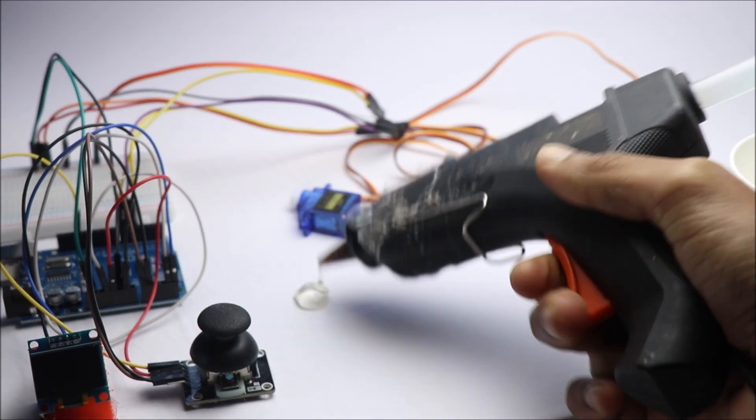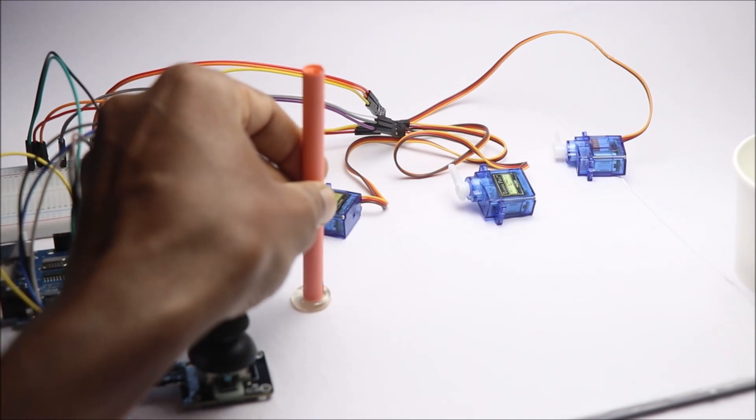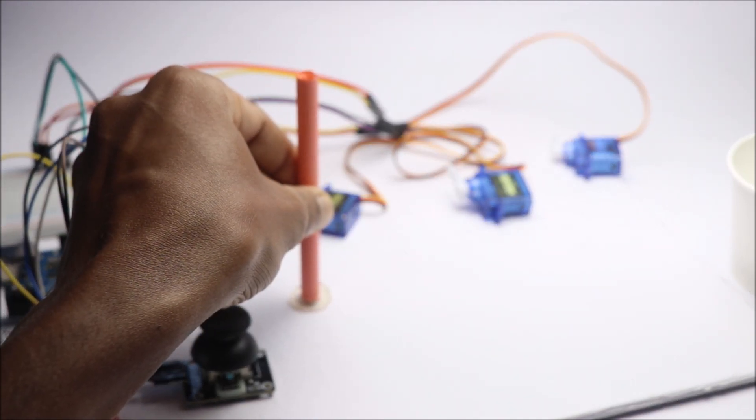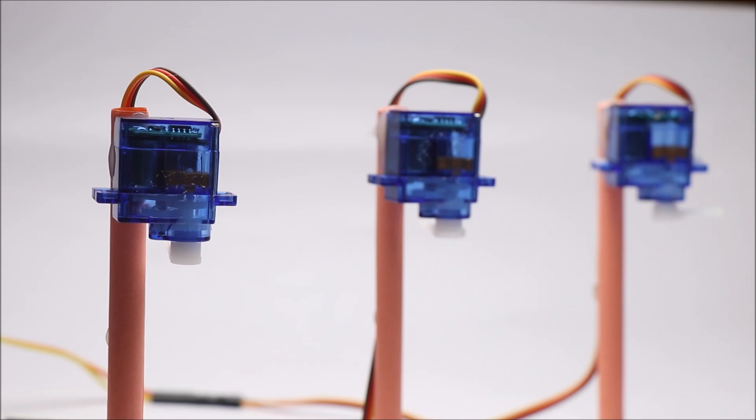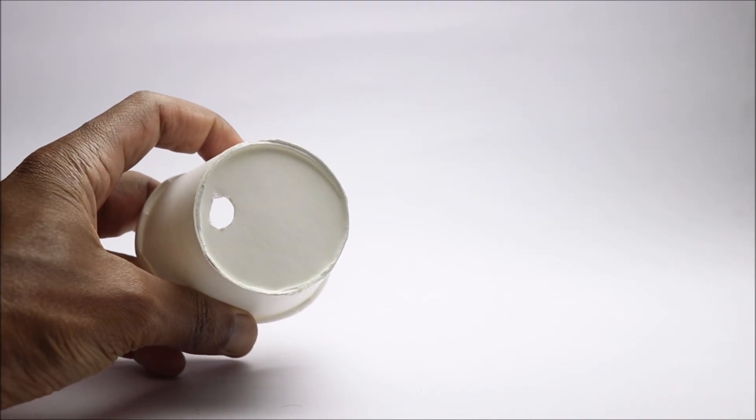Now I will set all these components on a piece of cardboard. I will use this simple mechanism to make the dispenser. Use hot glue wherever necessary.